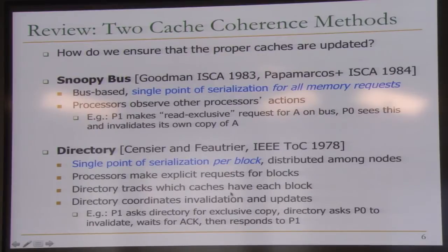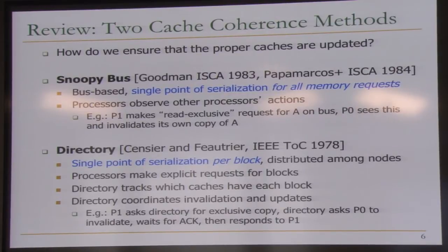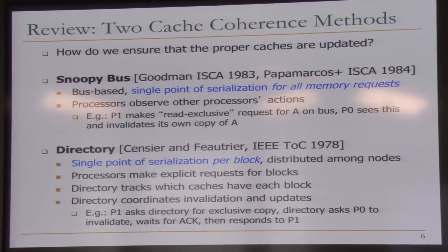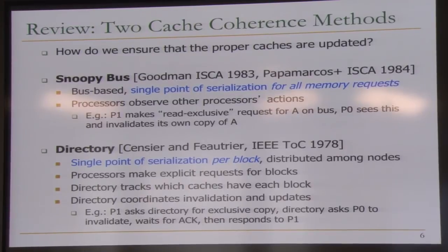The upside of the directory is you can make explicit requests for blocks. The directory is the middleman — everybody asks the directory first, the directory gathers the block and ensures it's kept coherent. Think of these as methods of implementing coherence. On top of this you have different protocols: valid-invalid, and what we'll see today — MSI (modified-shared-invalid) and MESI (modified-exclusive-shared-invalid). These protocols can be implemented using either of the two cache coherence methods.